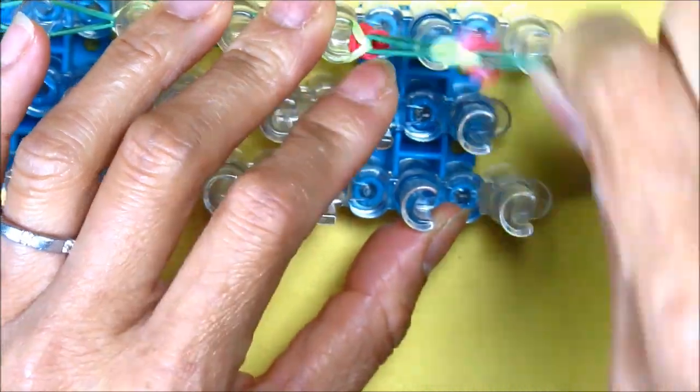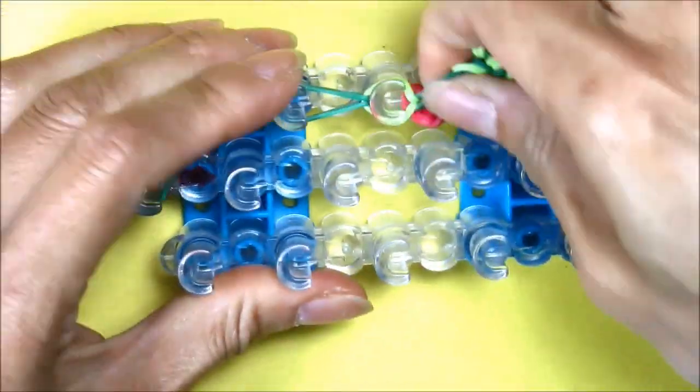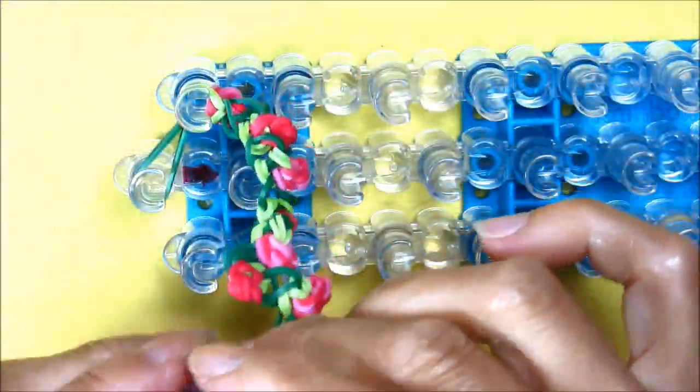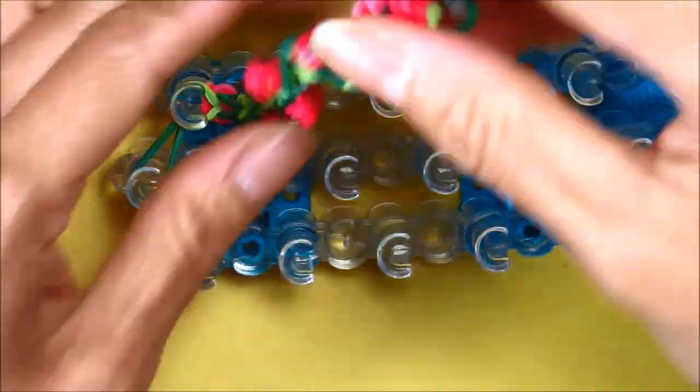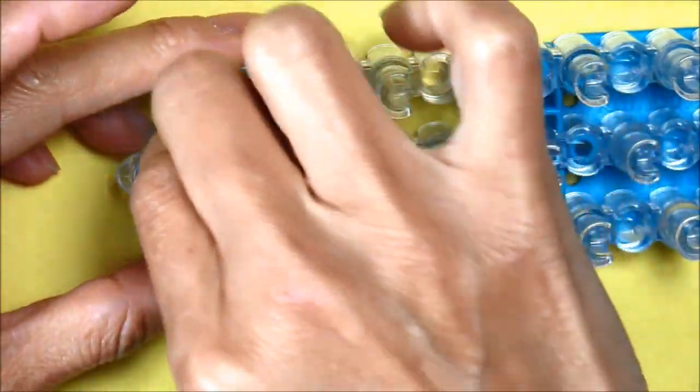And we can take it off the loom and attach it to the other side, making sure it's not twisted and attaching it to this side.